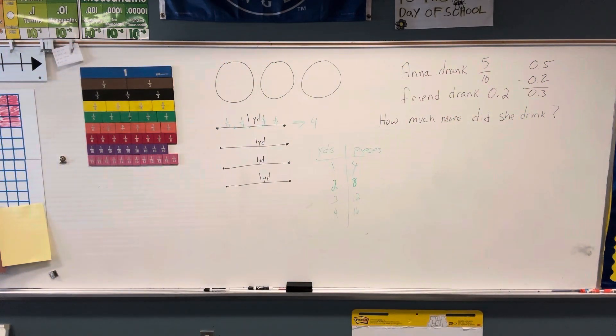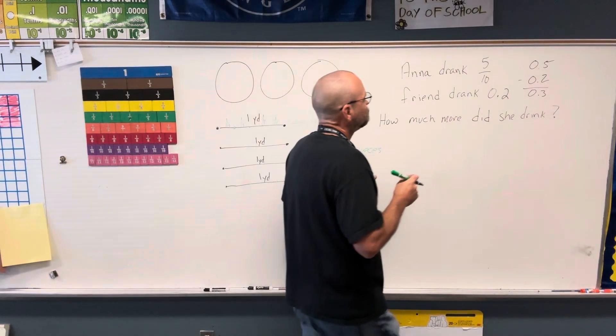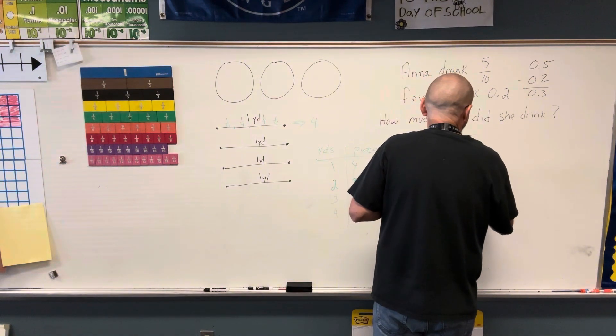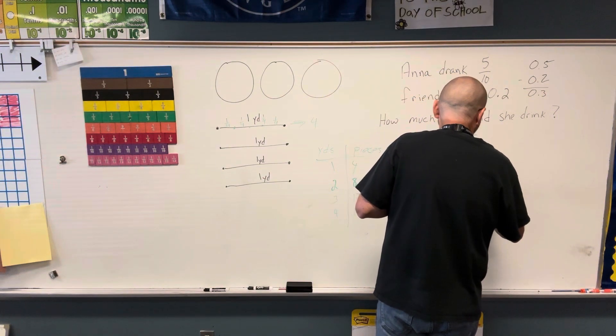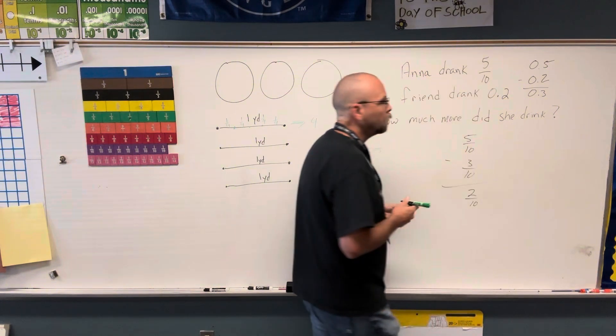So you're all really getting under Mr. McMurdo's nerves, and I would like you to stop. We can do five-tenths minus three-tenths and we get two-tenths. So either way, we could change it to a decimal.